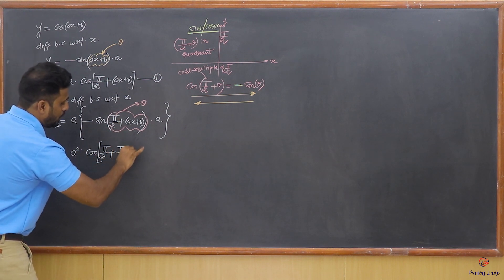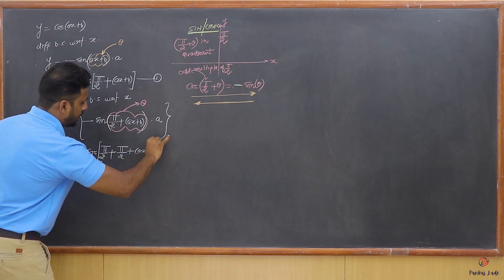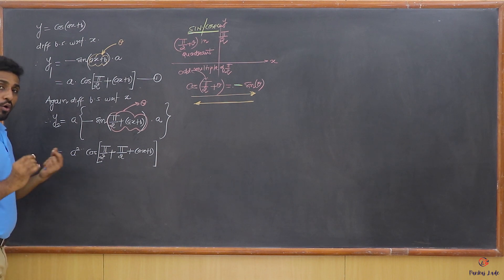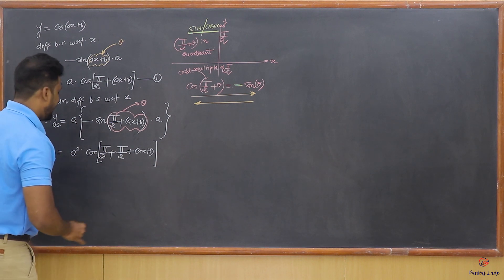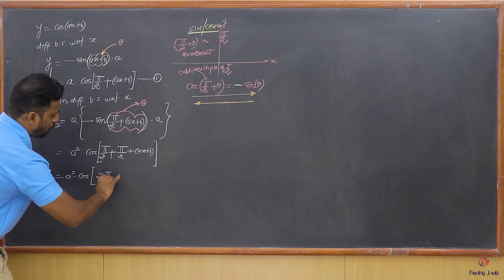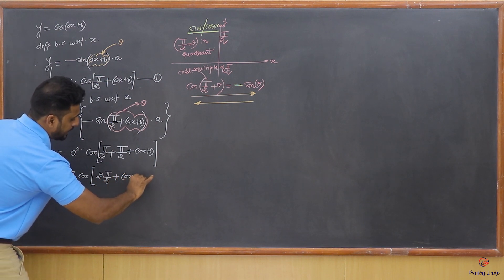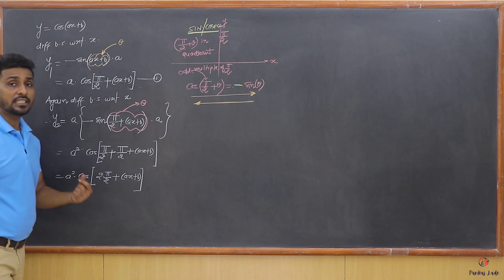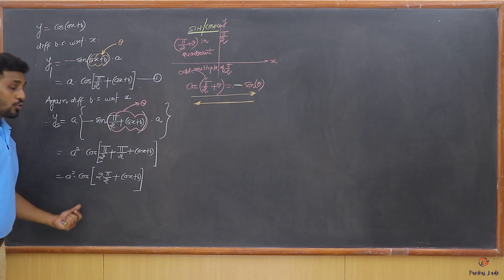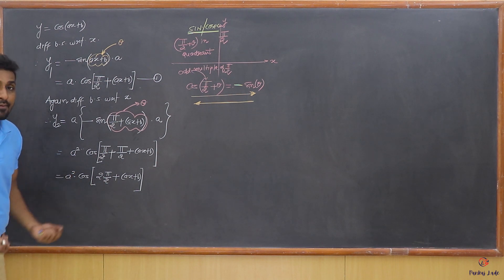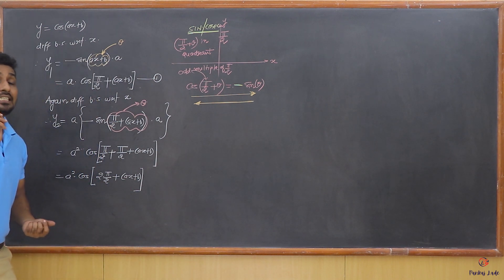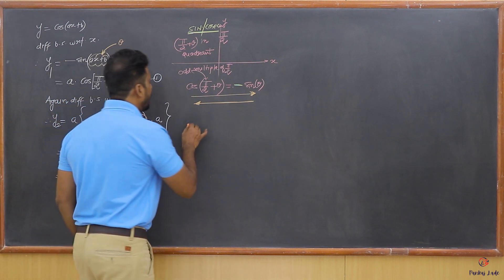Now (π/2 + ax + b) is theta, so this is minus sine(theta), and the formula for minus sine(theta) is cos(π/2 + theta). So I write cos(π/2 + (π/2 + ax + b)), which gives π/2 + π/2 = π, or written in general form: 2 × (π/2). So y2 = a² · cos(2 · π/2 + ax + b). Proceeding further, a² becomes a³, and 2×(π/2) becomes 3×(π/2), and so on.